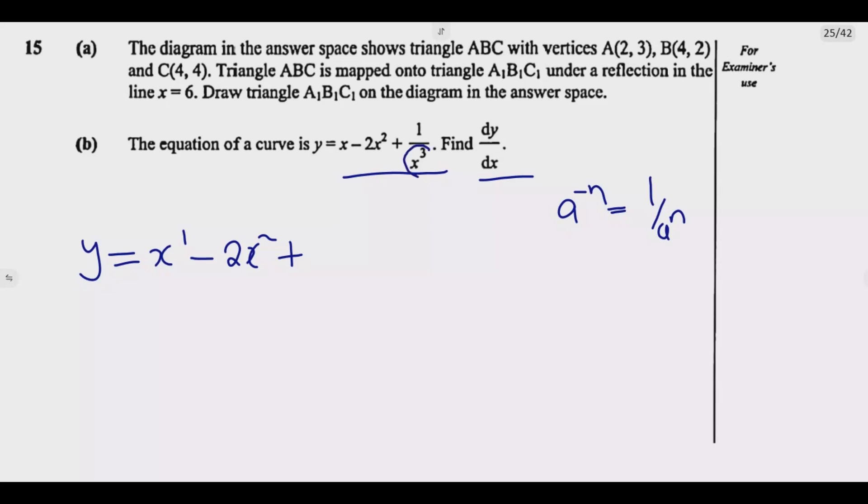So we do the opposite. So this becomes an exponent. This X to the power 3 becomes negative. So it will be X to the power negative 3. Then in differentiating,